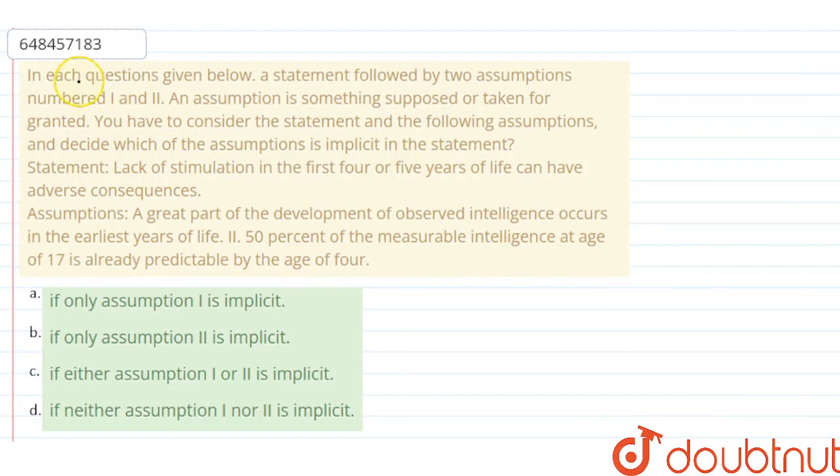Hello, the question is: In each question given below, a statement is followed by two assumptions, number 1 and 2. An assumption is something supposed or taken for granted. You have to consider the statement and the following assumptions and decide which of the assumptions is implicit in the statement.